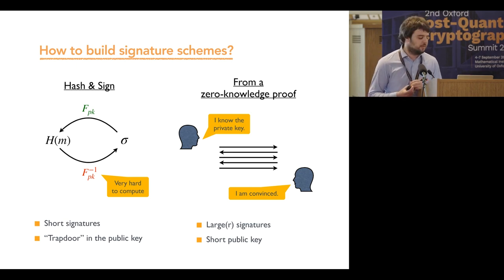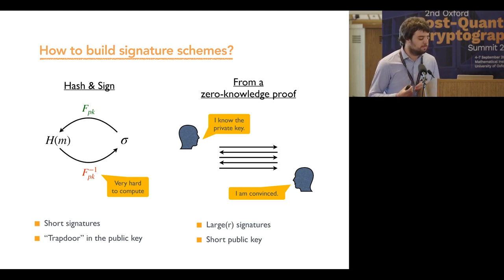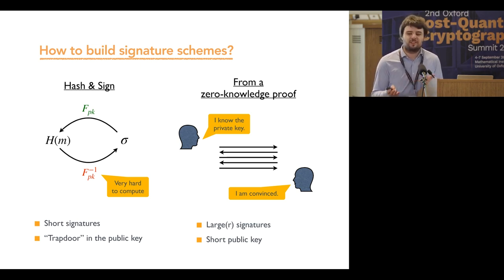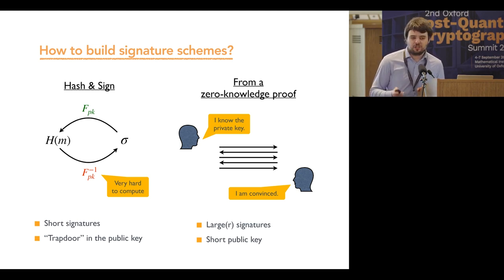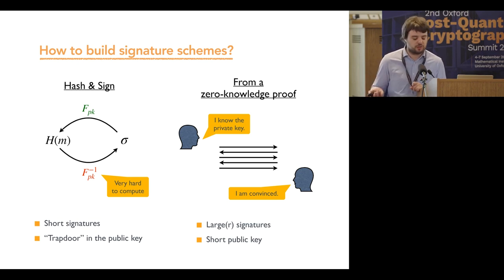The second approach is using a zero-knowledge proof-of-knowledge. In this case, we work on an interactive protocol between the prover and the verifier. The prover wants to convince the verifier that he knows the private key. There are standard techniques to transform such an interactive protocol into a signature scheme — this is named the Fiat-Shamir transformation. This approach leads to larger signatures, but has the advantage of being more conservative since there is no trapdoor, and it leads to a very short public key.